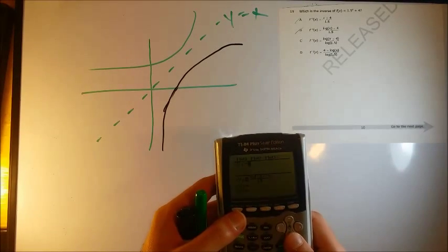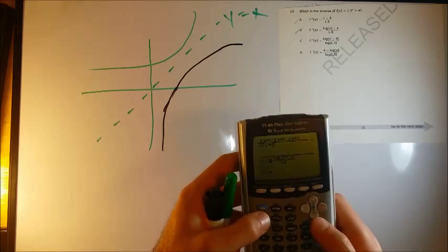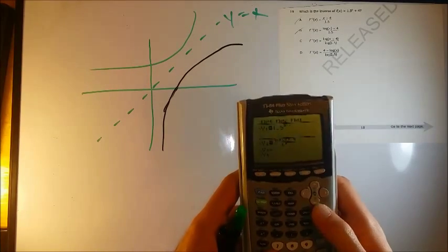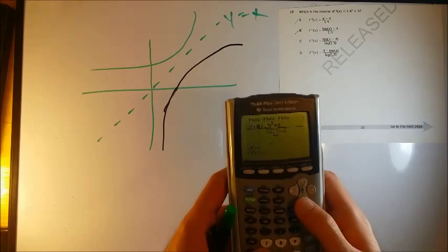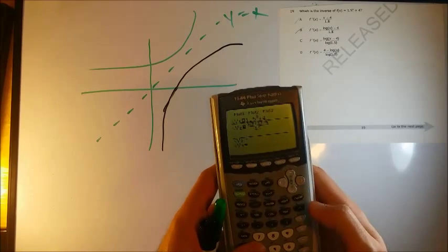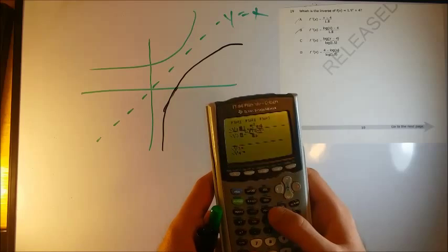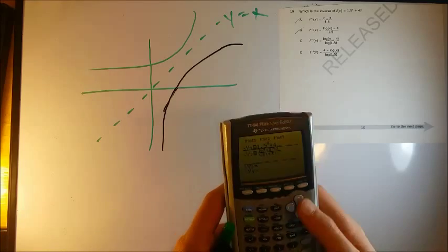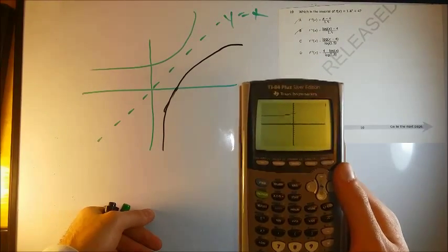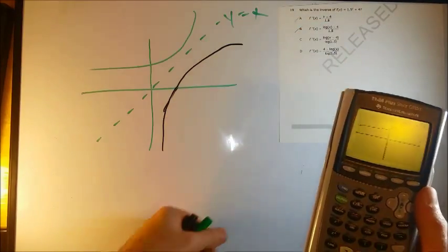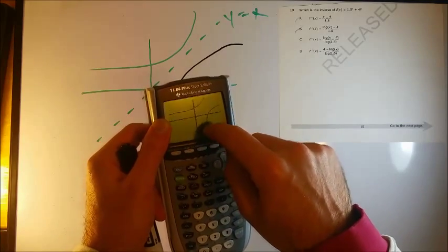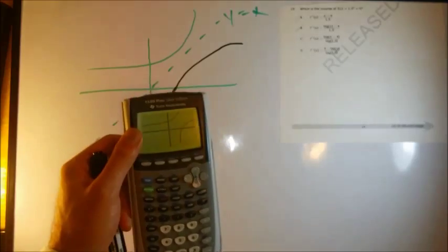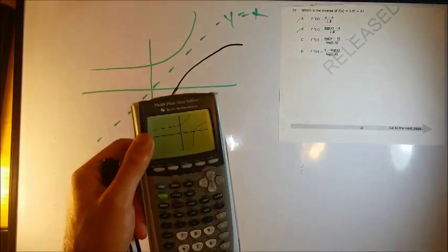Now let's try C. So we have log x minus 4 up top divided by log of 1.5 on the bottom graph. There's this function. Let's see if the bottom looks like it. You see this is a perfect reflection across that. The fact that it's not that straight line there, that's actually okay. If you look at it like this, that is a perfect reflection across that y equals x line at this point.